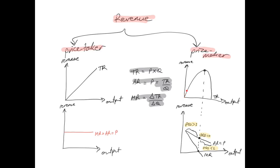For a price maker, the total revenue curve increases at a decreasing rate, reaches a maximum, and then begins to decrease. This is because of elasticity. On a straight-line demand curve — which is also the average revenue curve — at the midpoint, PED equals zero and demand is unit elastic. This is the point where marginal revenue equals zero and total revenue is maximized. Above the midpoint, demand is elastic; below the midpoint, marginal revenue becomes negative, total revenue is decreasing, and demand is inelastic.